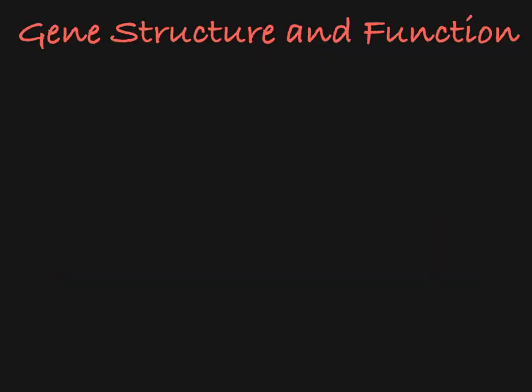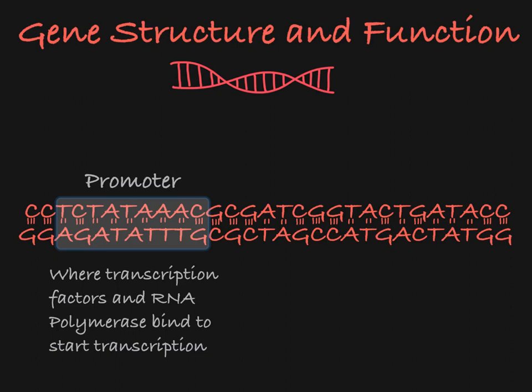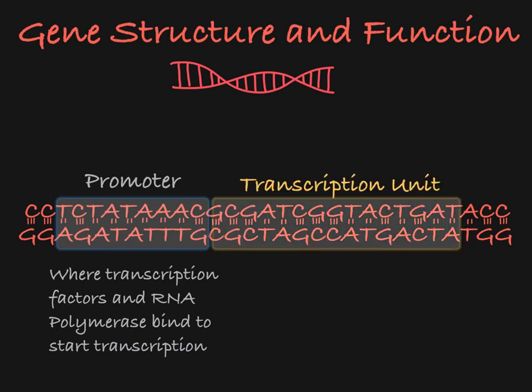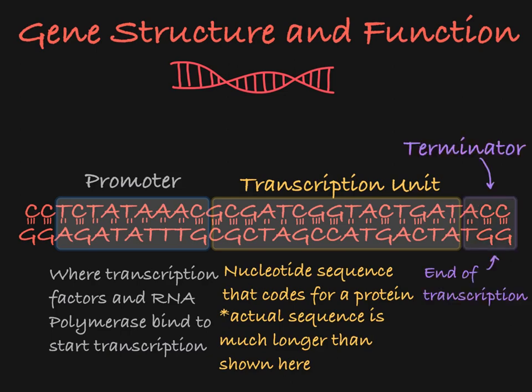Let's take a look at the structures of a gene that make transcription possible. First, we have a promoter region, which is where transcription factors and RNA polymerase bind to the DNA to prepare for transcription. Then we have the transcription unit, which contains the actual nucleotide sequence that codes for the protein. Finally, we have a termination sequence, which signals the end of transcription.